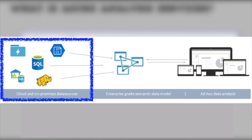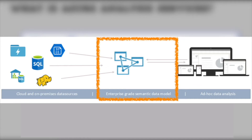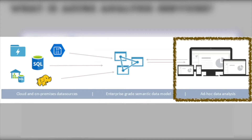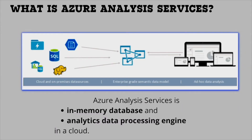As you can see on your screen, you can ingest data into Azure Analysis Services from any of your cloud and on-premise data sources. Then you have your Azure Analysis Services where you get an enterprise-grade semantic data model, and at last you can use any of your favorite data visualization tool to do your ad-hoc data analysis. Remember that Azure Analysis Services is an in-memory database and also an analytic data processing engine in the cloud.